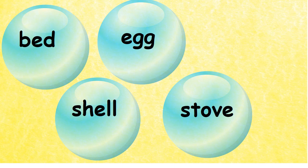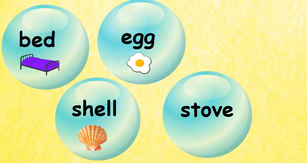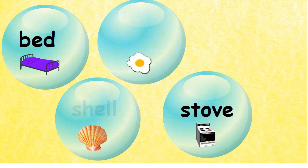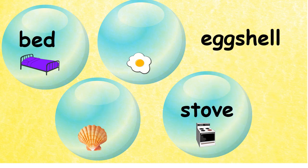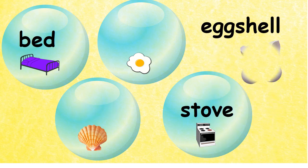Here we have bed, egg, shell, and stove. Let's see which two words we are going to use. We are going to use egg and shell. Egg and shell will give us eggshell. Our compound word is eggshell.